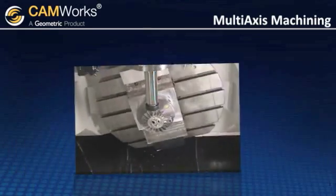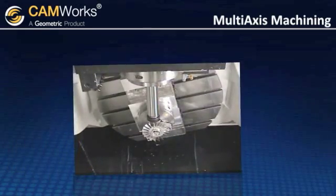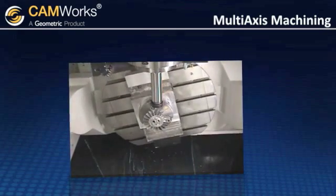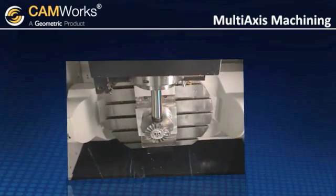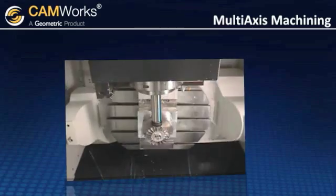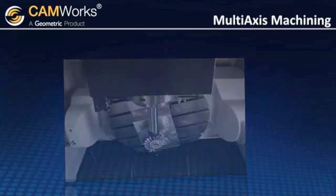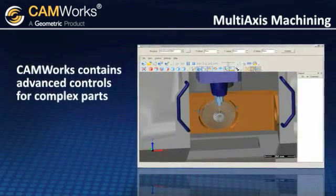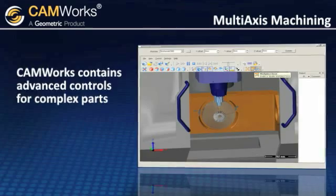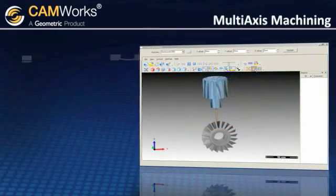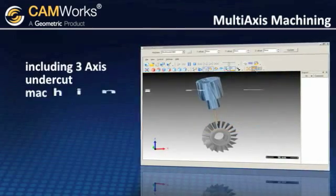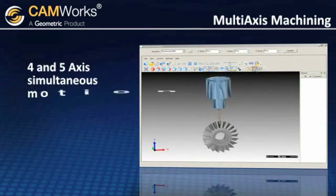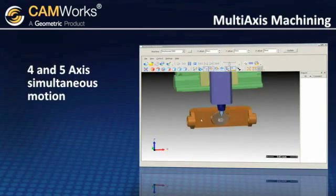The NC code can be sent to any of the multi-axis machines to get an accurately machined part with excellent surface finish. CamWorks machining contains advanced controls for machining complex multi-axis parts, including 3-axis undercut machining and 4-axis and 5-axis simultaneous motion.